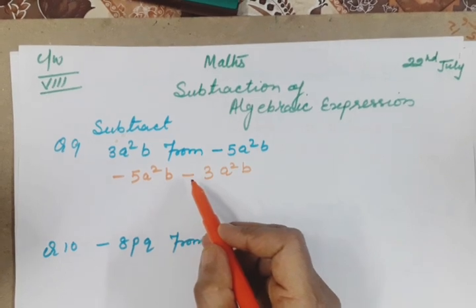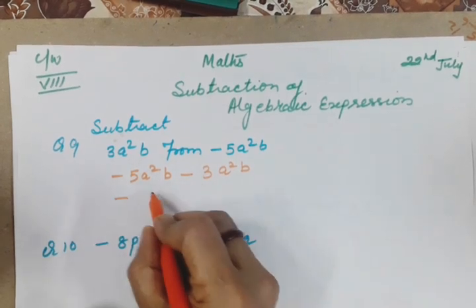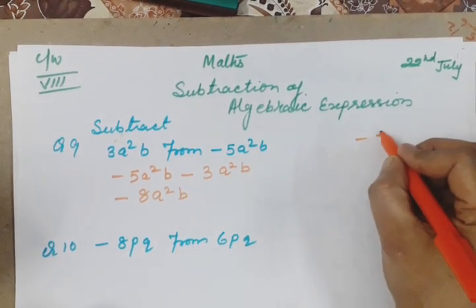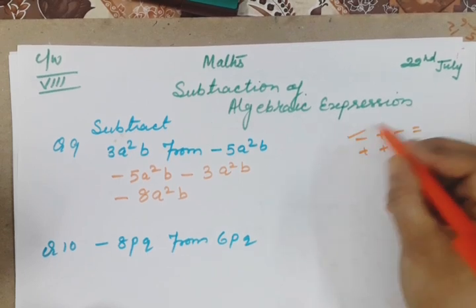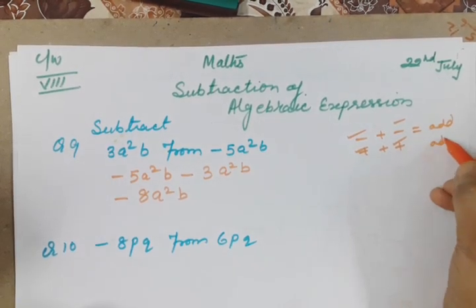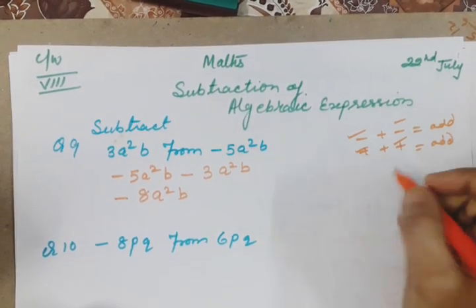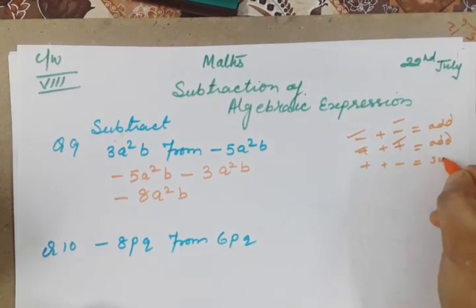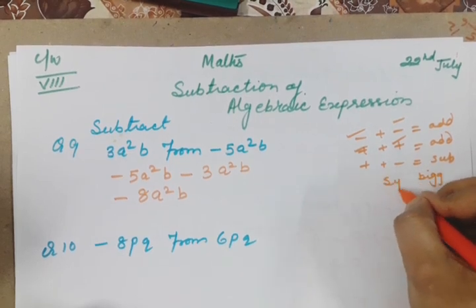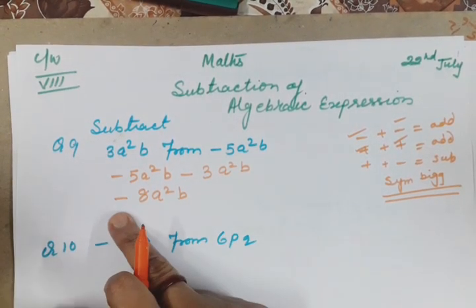Now minus minus, both signs are minus so what to do? Minus minus plus, and the sign should be minus. -5 minus 3 becomes -8a²b. You know during addition, if minus is added to minus or plus is added to plus, same two signs always add. The symbol: if negative then both will have minus, if positive both will have positive. If one plus and one minus add, we subtract and symbol is of bigger value.